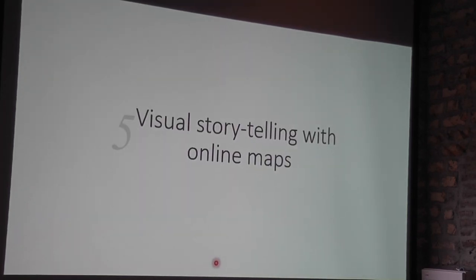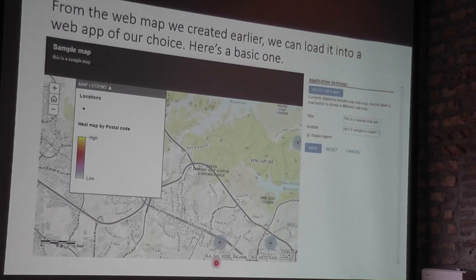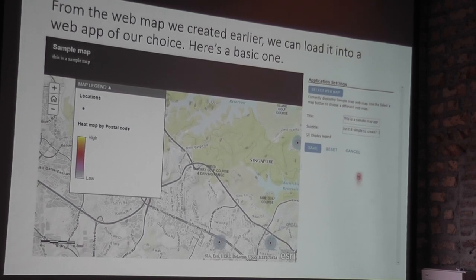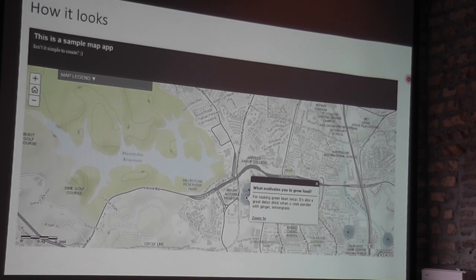Visual storytelling: after creating a map, we want to make a storytelling map. This is the most basic form I chose — it just asked me for a title and subtitle, and then it creates this story map. It doesn't add much more value on its own, but it is the most basic form.